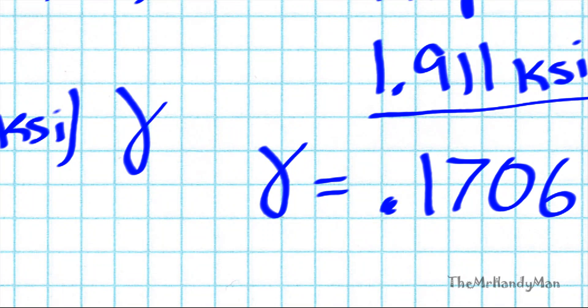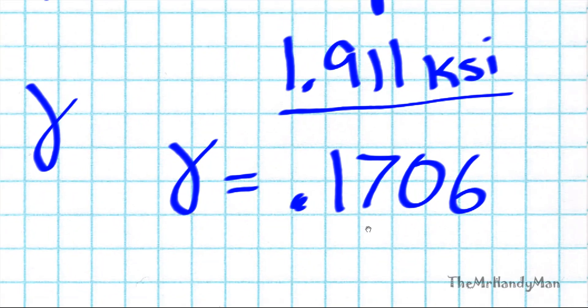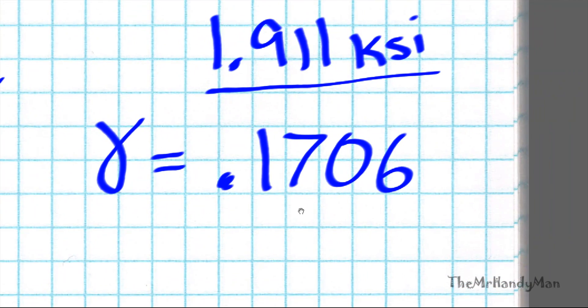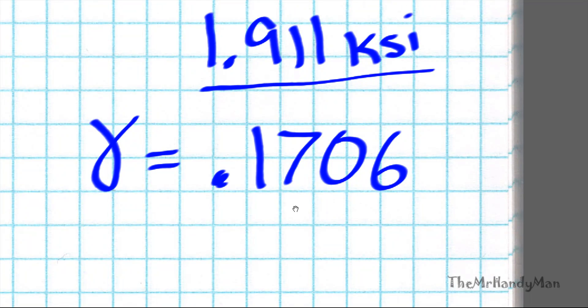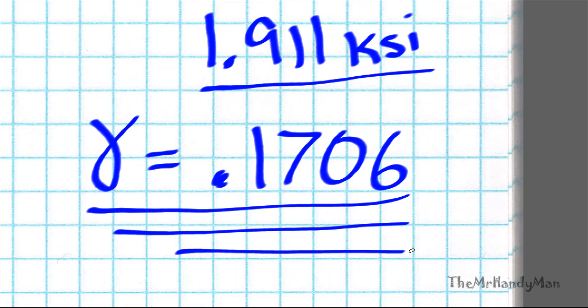And when we work it out, it just equals 0.1706. Now I'm not going to say what units this is, but it's a little bit different. It's kind of like KSI over KSI. It's a little bit detailed, but all you need to know is that this is our general deflection right here.